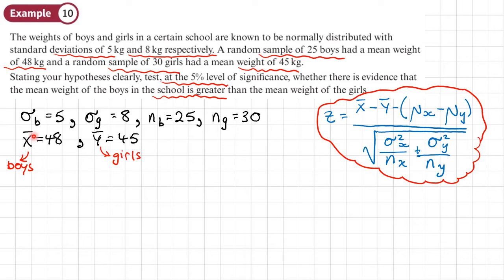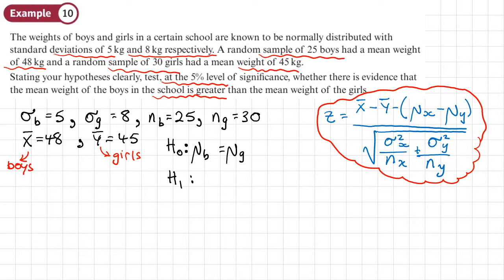Once the values are written down, we write H0 and H1. H0 is that there is no difference between the mean weight of the boys and the girls — it's always going to be that when hypothesis testing for the difference between means. H1 says we're looking to see whether the mean weight of the boys is greater than the mean weight of the girls, so this is going to be an upper tail test.